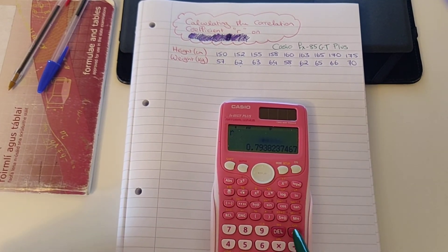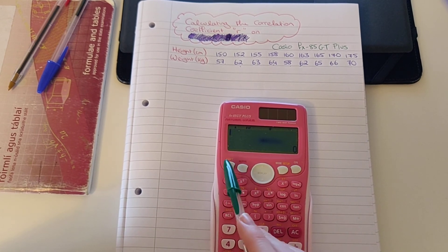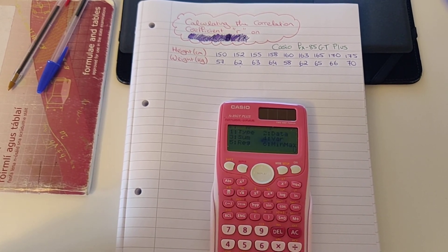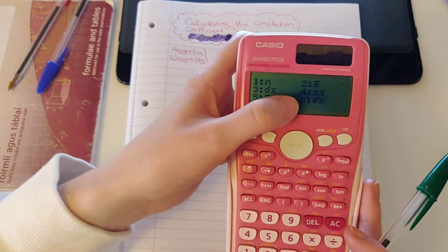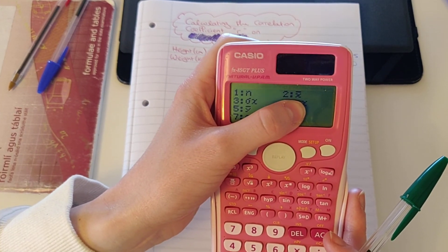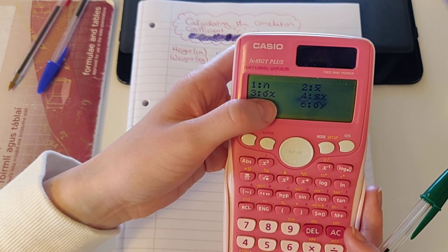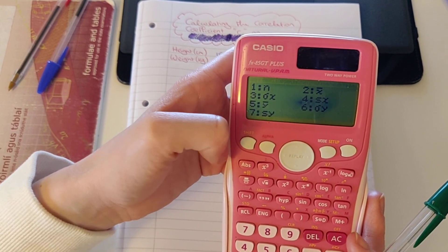OK, to get rid of this, I'm going to press AC again. If I wanted to get more about the data, I could press 1 in statistic and 4 for variable. I could press 2 to get my mean, which is X with a little hat here. I could press 3 to get my standard deviation.